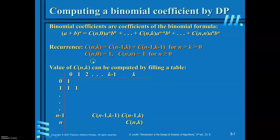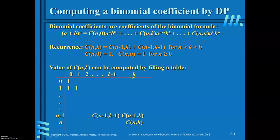The initial conditions for filling the table are C(n,0) = 1 and C(n,n) = 1. The diagonal elements are equal to 1 and the first column (0th column) is all equal to 1 irrespective of the row index i. Here, i varies from 0 to n and j varies from 0 to k.